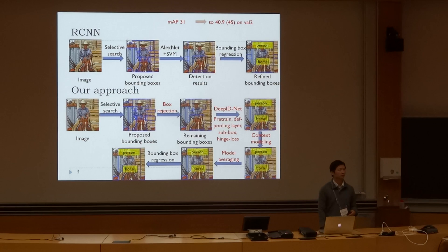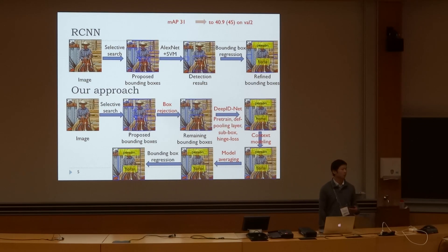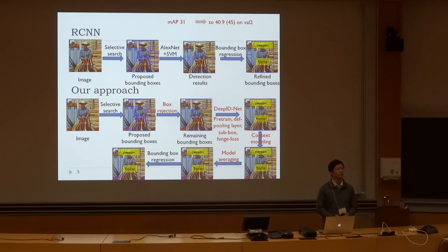Our approach has a long pipeline which includes many components not existing in the RCNN approach. With these components, we are able to achieve about 40.9 in AP on the validation 2 dataset, which uses the same split from validation 1 and validation 2. Our recent result is 40.9 in AP on the validation 2 dataset.